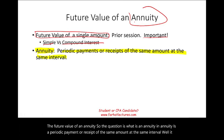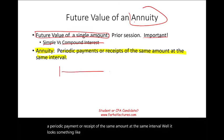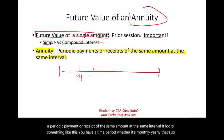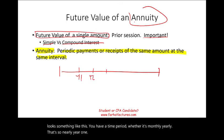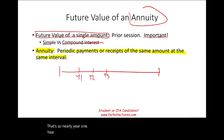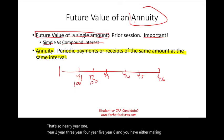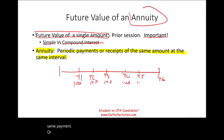It looks something like this: you have a time period — whether it's monthly or yearly, let's assume yearly — year one, year two, year three, year four, year five, year six. And you have either making the same payment or receiving the same amount of money at those intervals. This is what an annuity looks like.